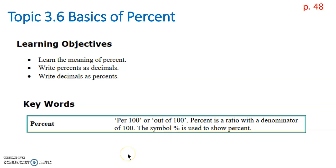The word percent by definition means per 100 or out of 100. Every time we want to make a percentage, we can think about it as a ratio with a denominator out of 100. When we show the number that would be in the numerator, we use a percent sign.